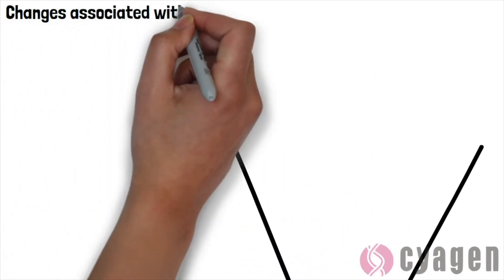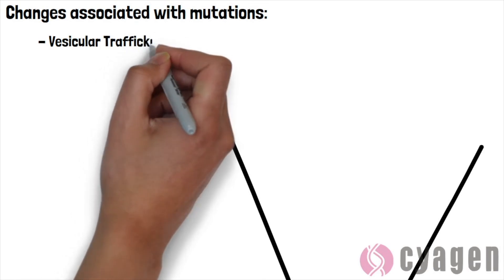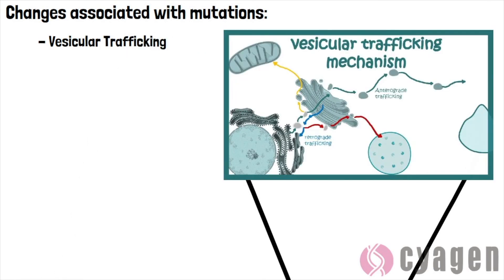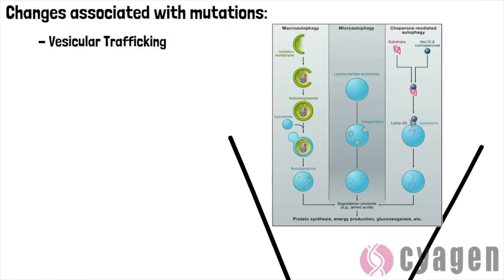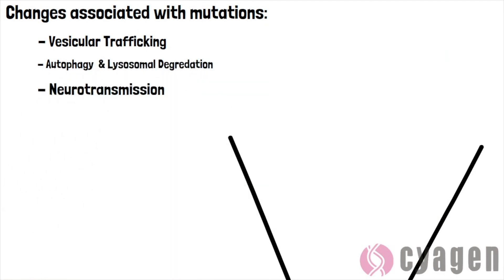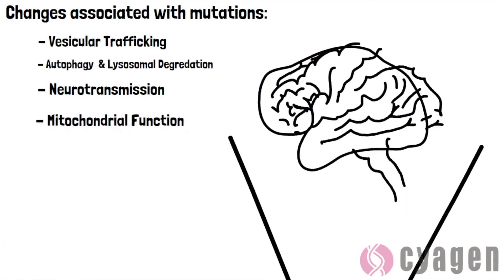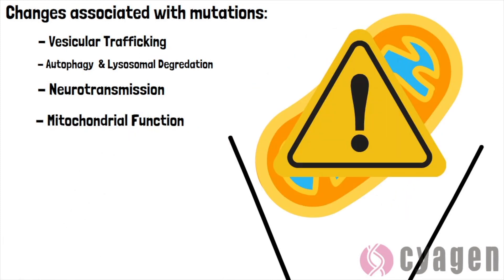Functional changes associated with the LRRK2 mutation include changes in vesicular trafficking and cytoskeleton dynamics, autophagy and lysosomal degradation, neurotransmission, mitochondrial function, and immune and microglial response.